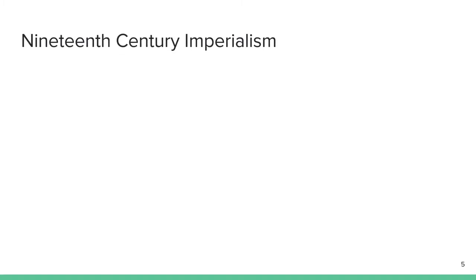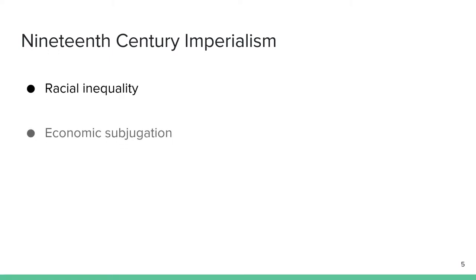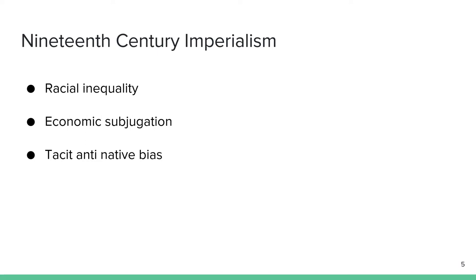The crisis of the empire and decolonization did not happen overnight. It started showing slow but definite signs of collapse by the early decades of the 20th century. 19th century imperialism was characterized by the exploitation of racial inequality, economic subjugation, and a tacit anti-native bias. For more than a century, the colonies had served as important sources for the generation and supply of raw materials, and then markets for the finished goods manufactured in England.